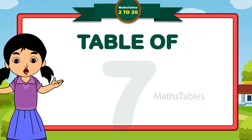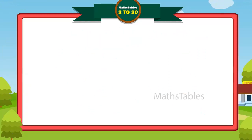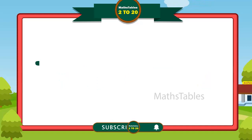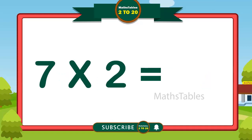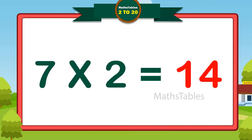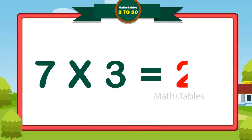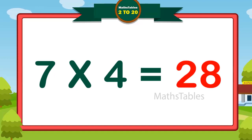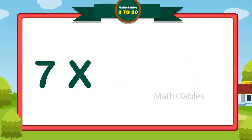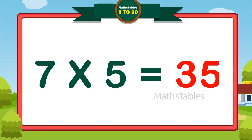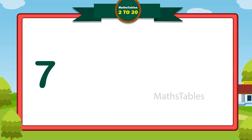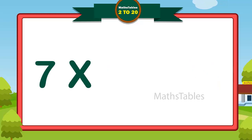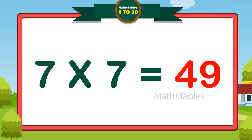Hi friends, now we will learn table of 7. 7 ones are 7. 7 twos are 14. 7 threes are 21. 7 fours are 28. 7 fives are 35. 7 sixes are 42. 7 sevens are 49.